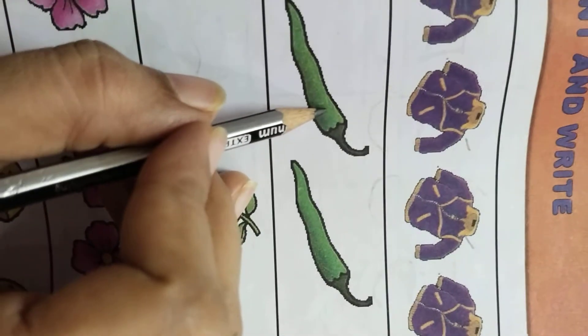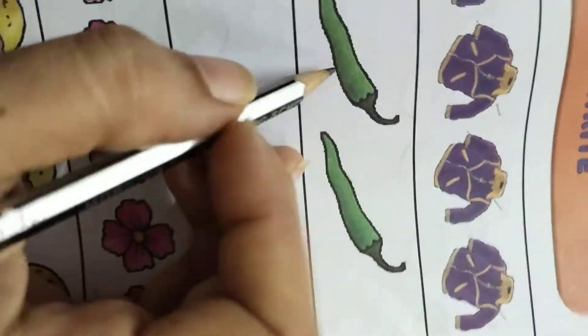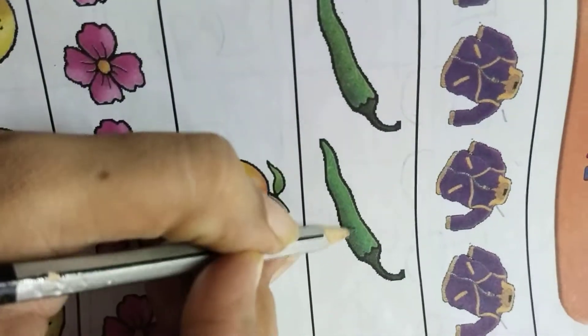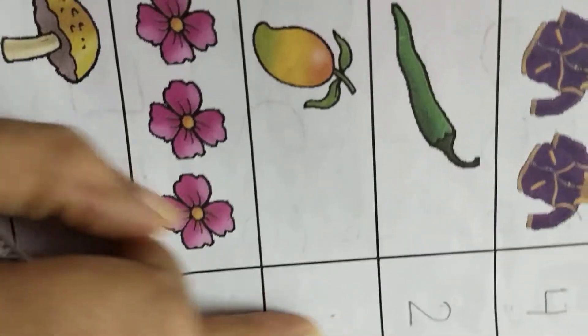Next, there are chillies. How many mangoes are there? Count it. One, two. So you can write number two here. You can add a dot for help.